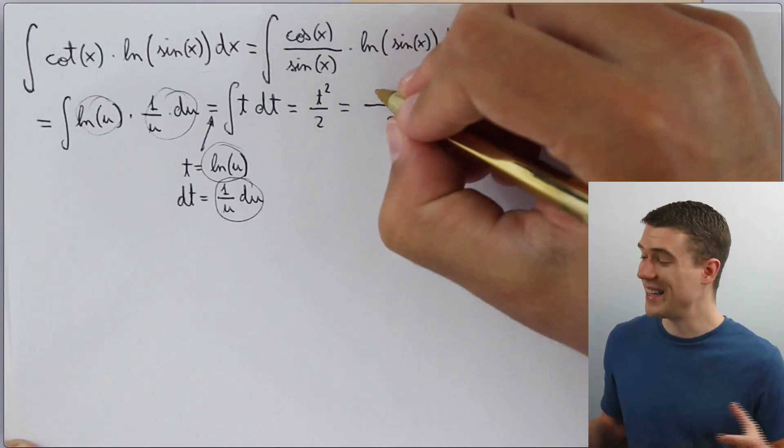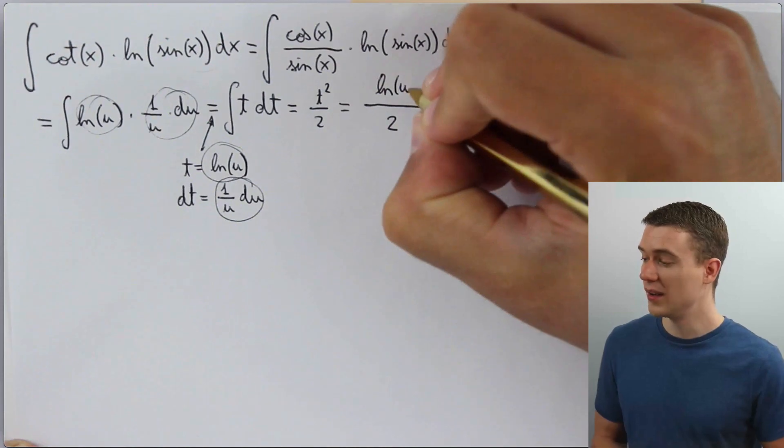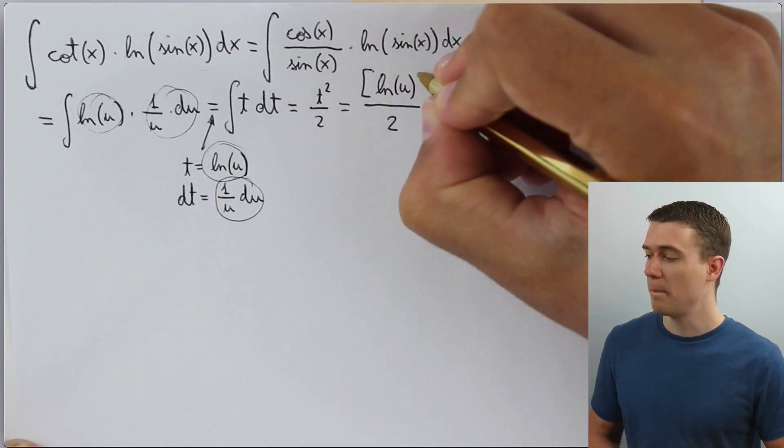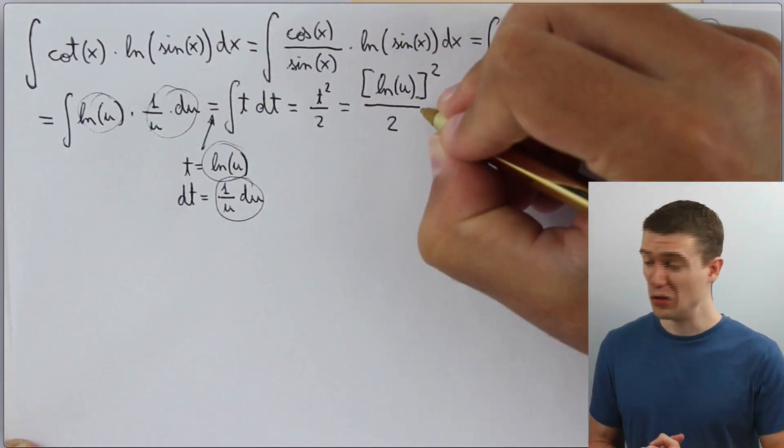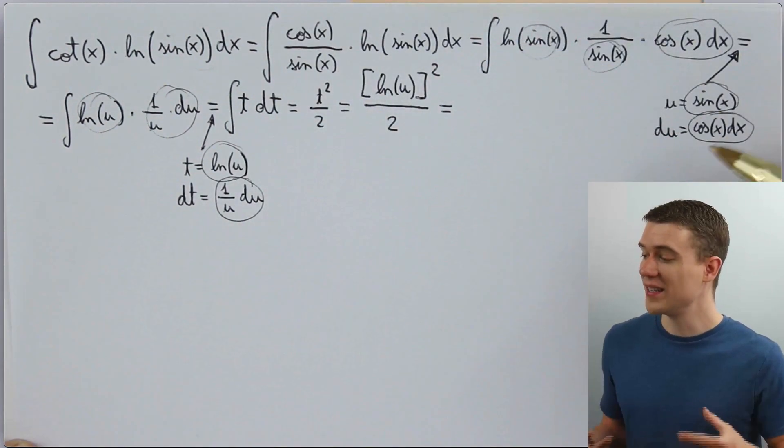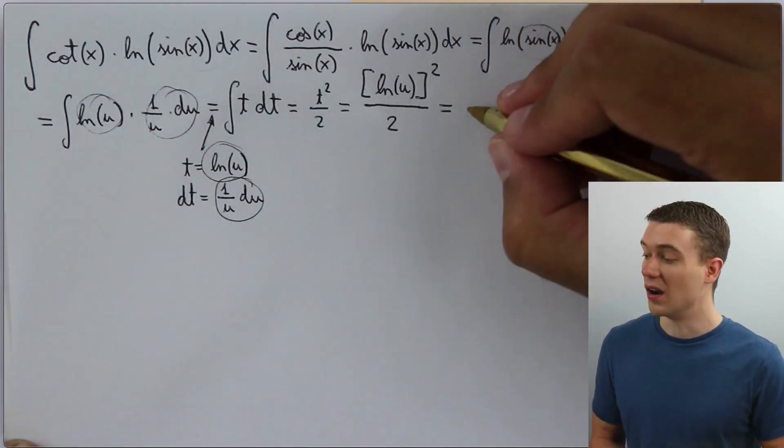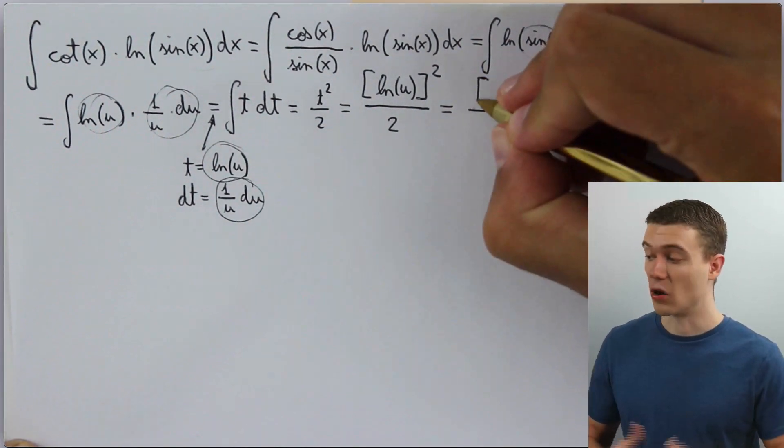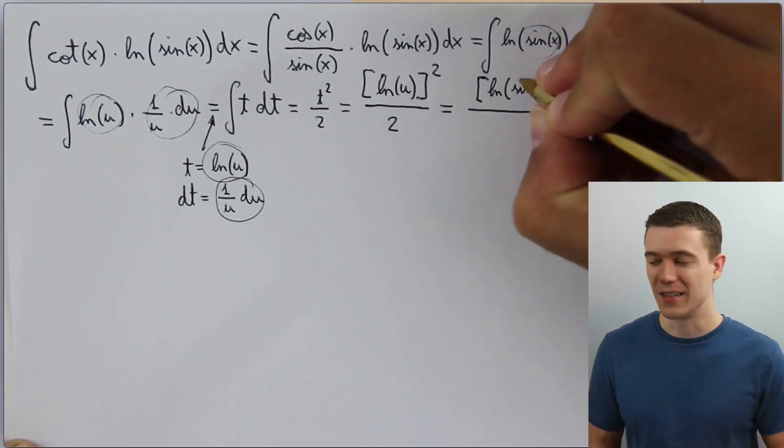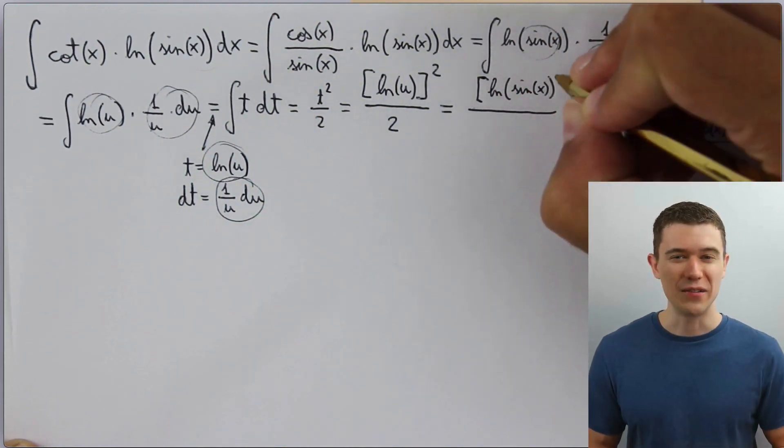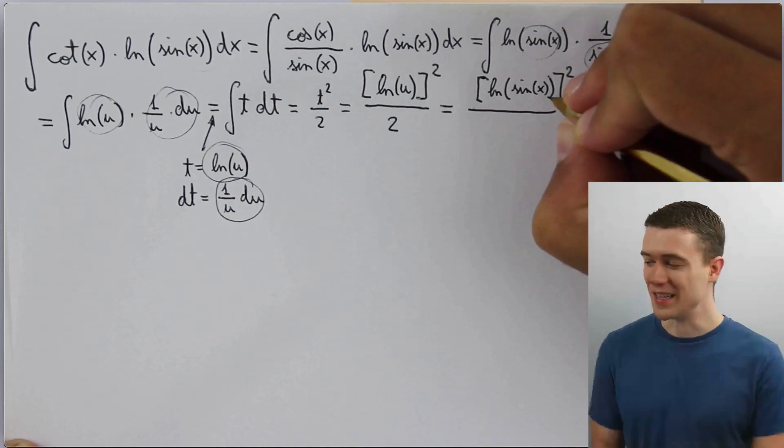We know what t is. t is the natural log of u squared over two. But we know what u is. u was sine. So this is now natural log of sine x all squared over two. And as I like to say, every good indefinite integral deserves a plus c at the end.